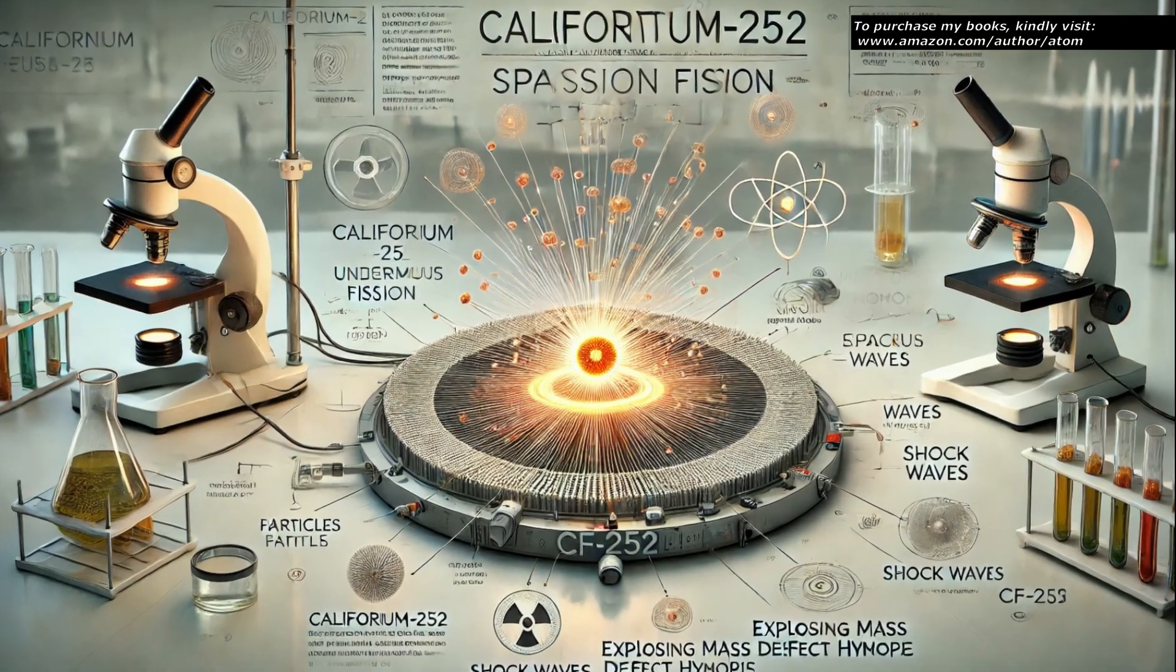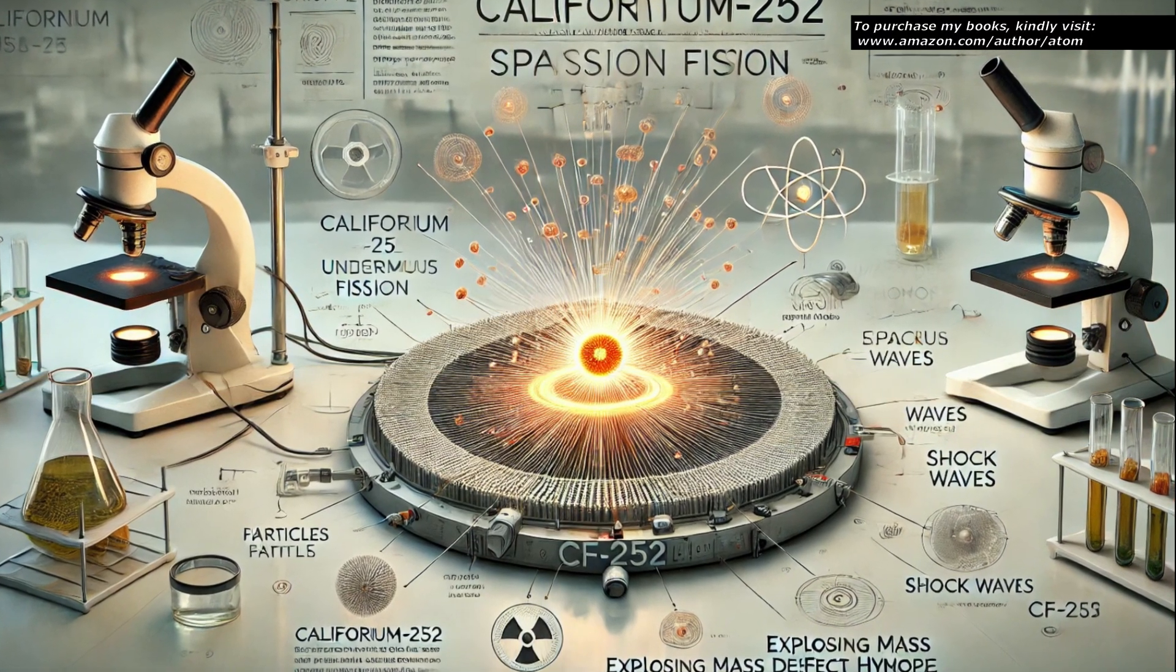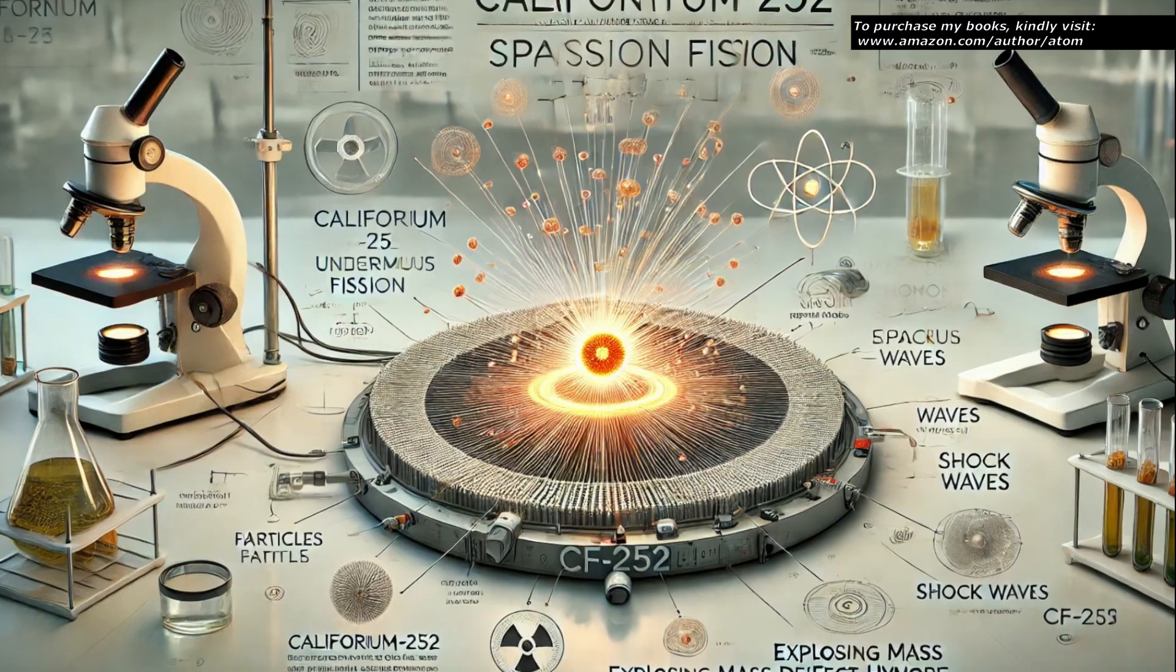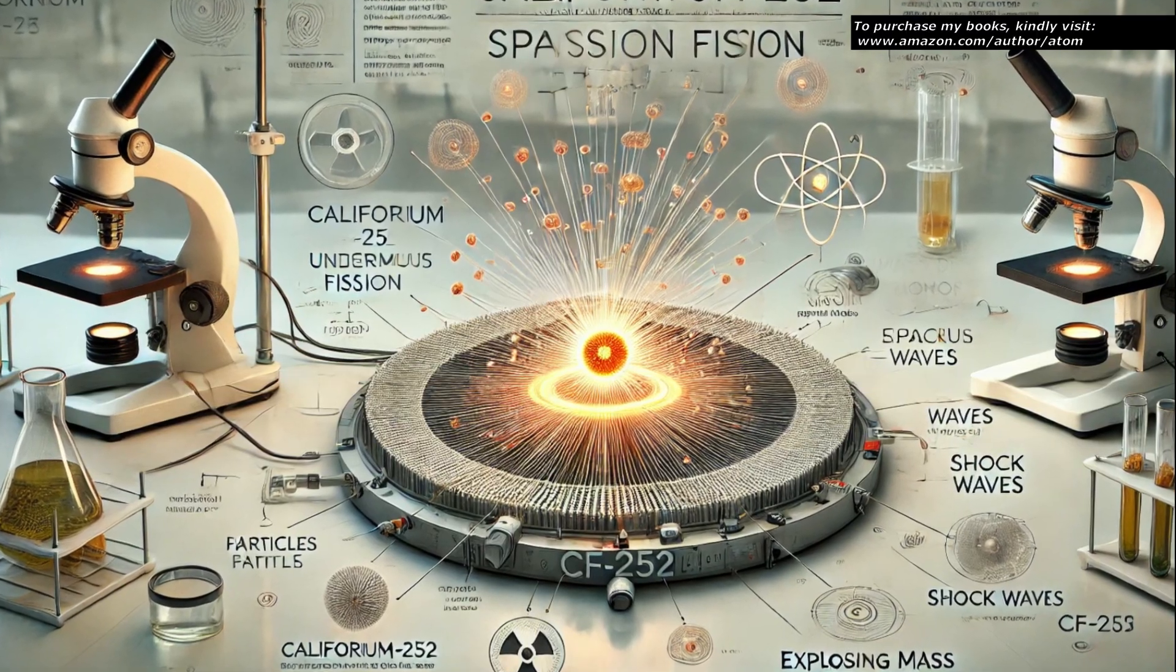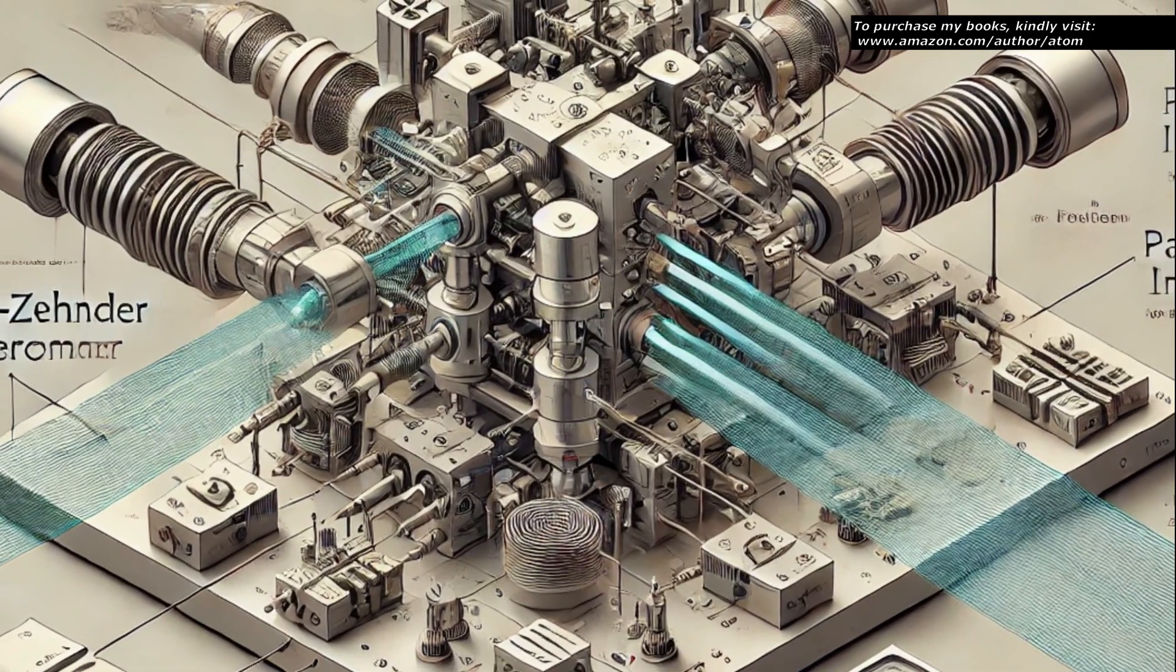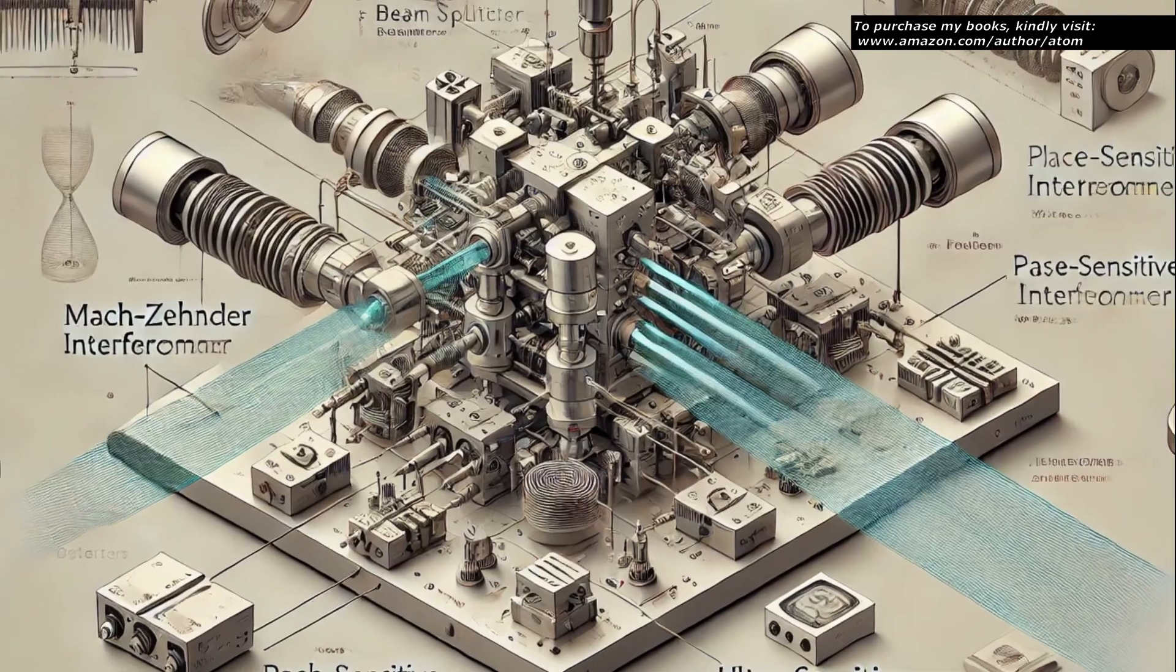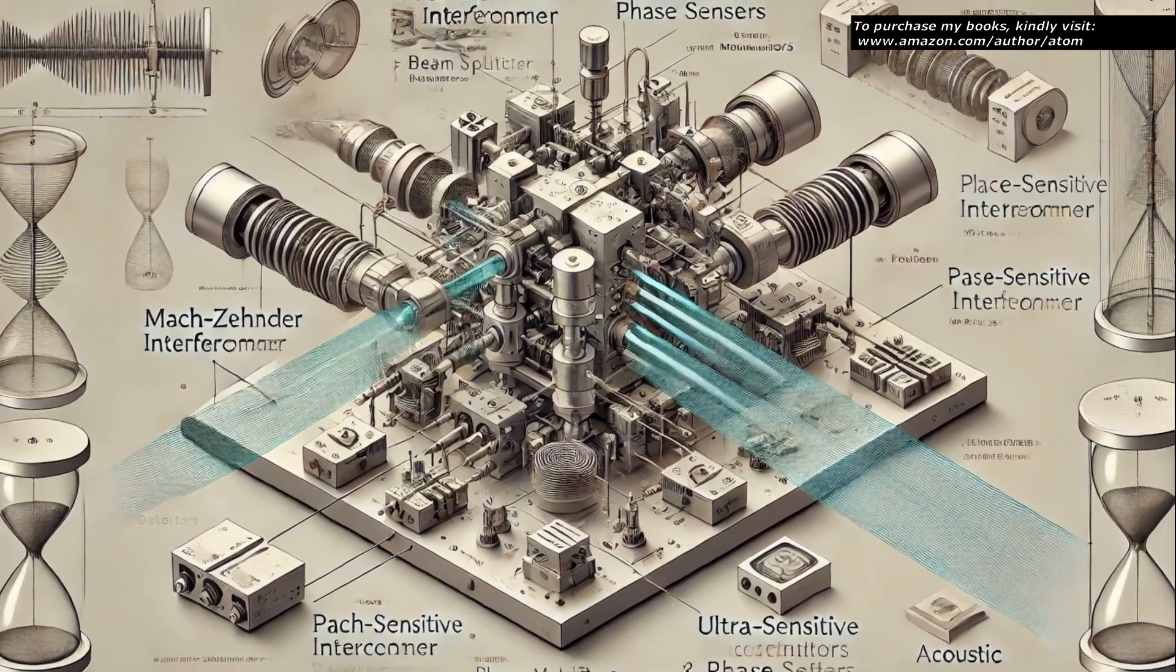The experiment aims to investigate the exploding mass defect hypothesis by detecting shock waves generated during the spontaneous fission of Californium-252. This is accomplished using a Mach-Zehnder interferometer enhanced with multiple beam paths and phase-sensitive detection alongside ultra-sensitive acoustic detection methods.